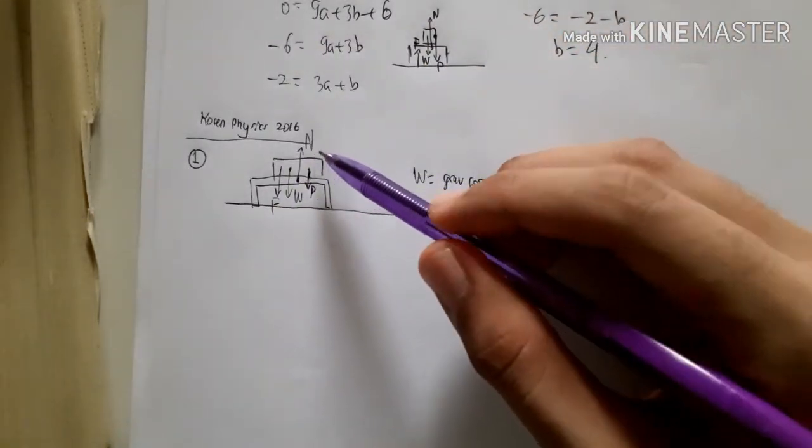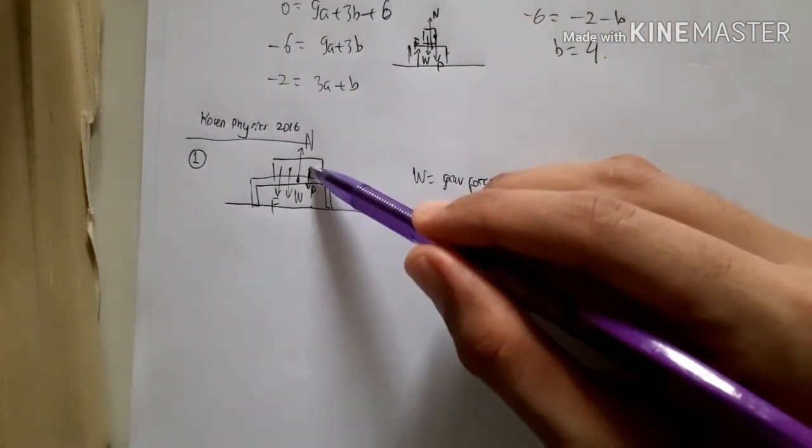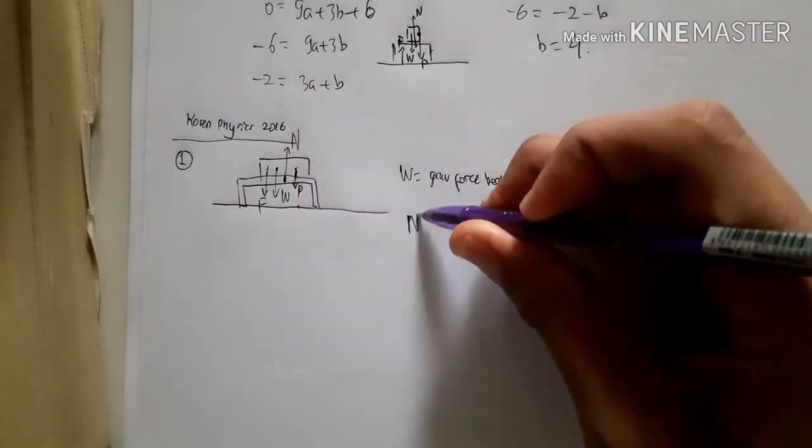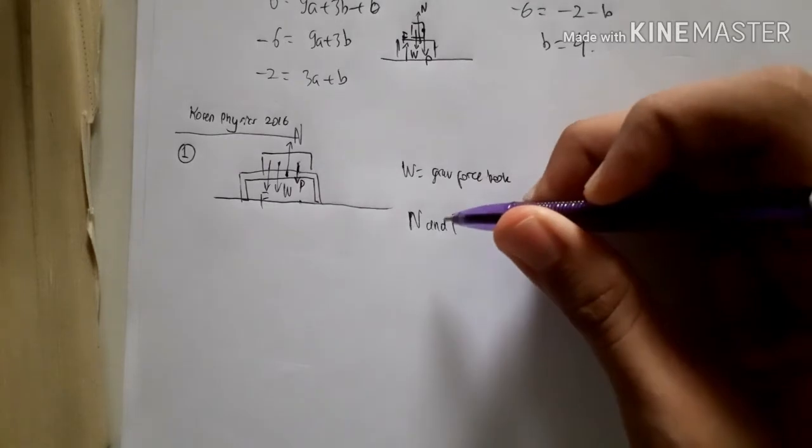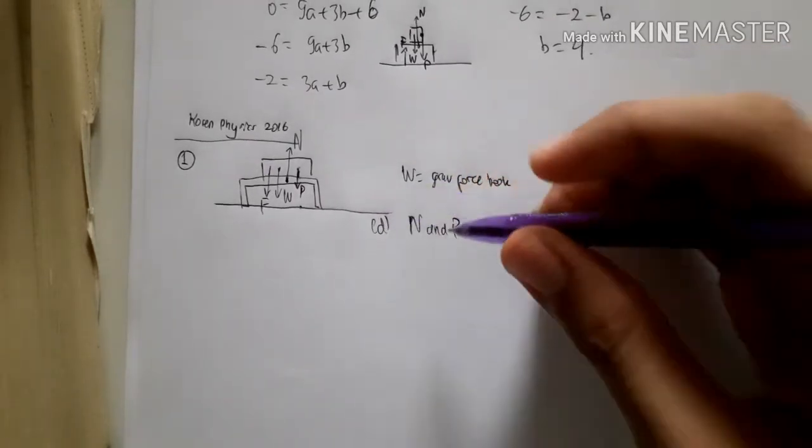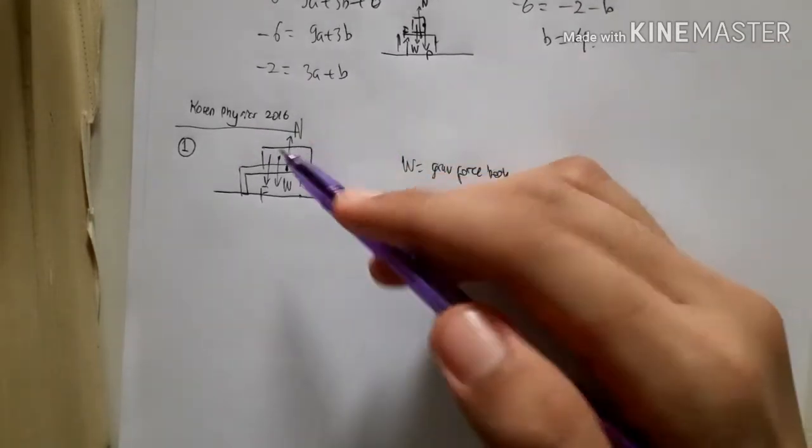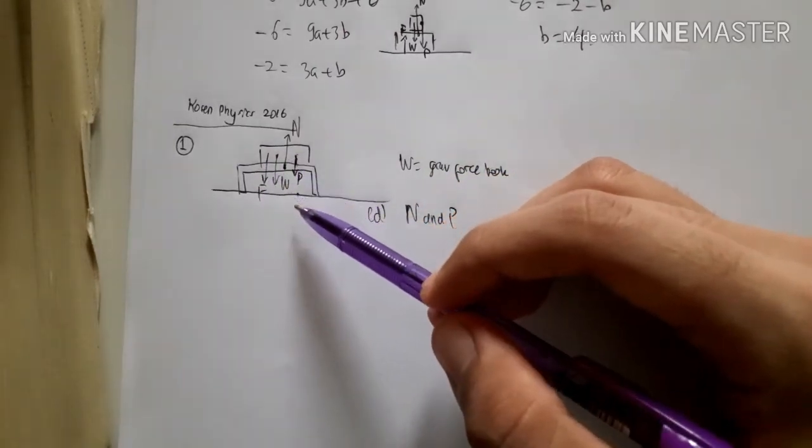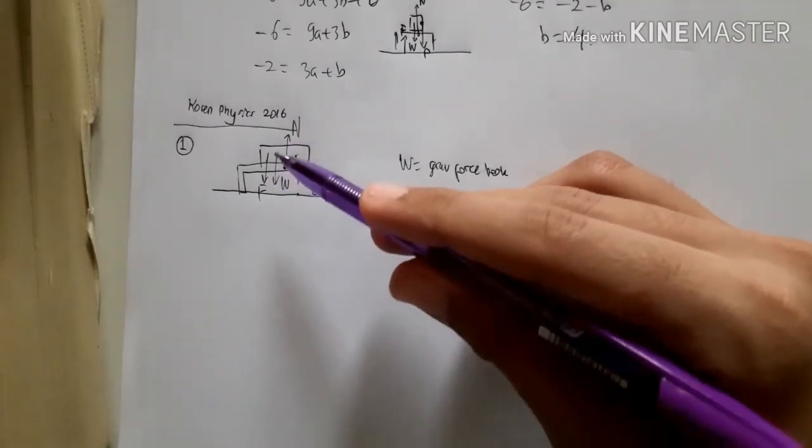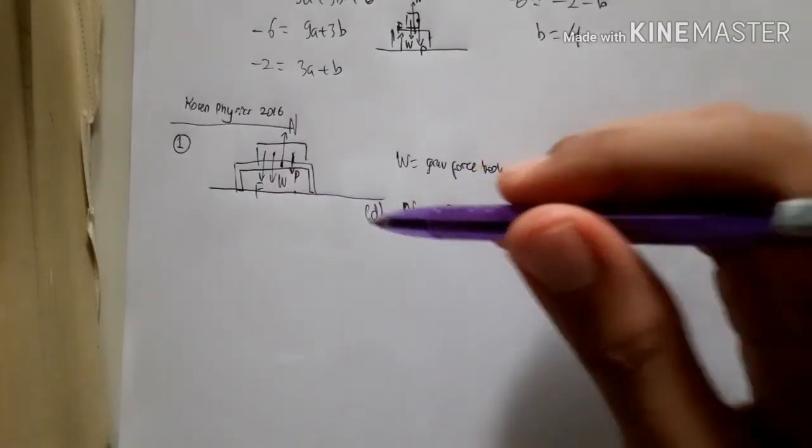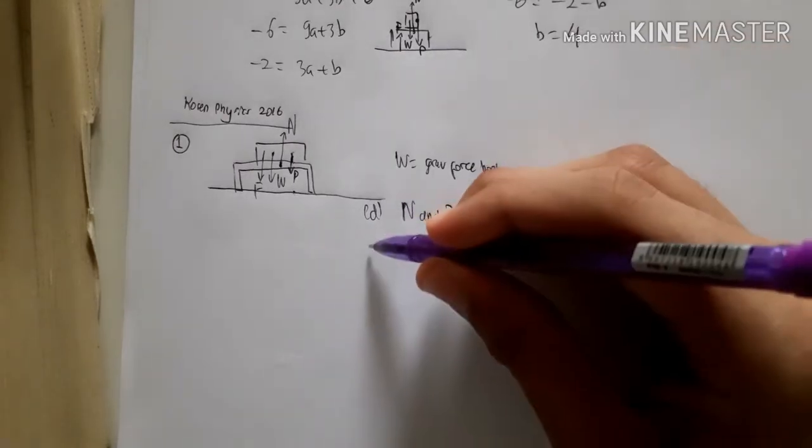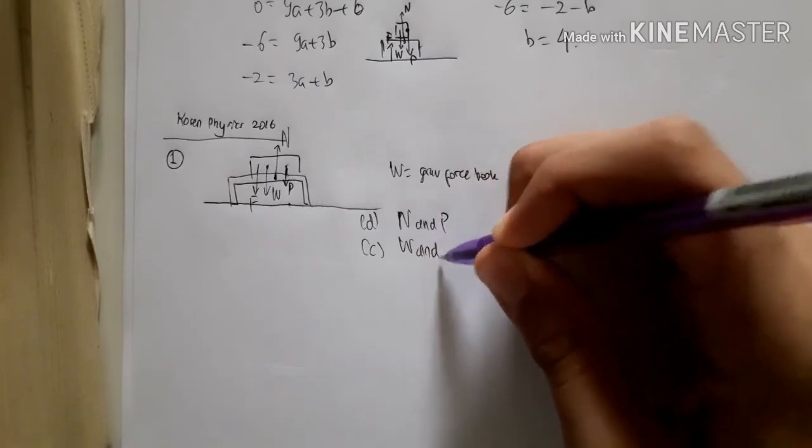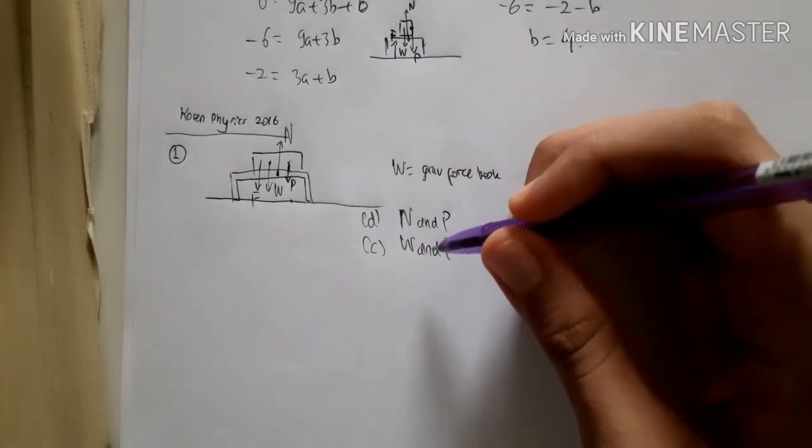So there's a pair here. When the book pushes the table, the table pushes back. So basically N and P is one of the pairs and that is option D. And for the gravitational force, it's actually a pair too because the book and the earth is not moving and the gravitational force is pushing towards each other, therefore making an action-reaction law. So option D and option C is the answer for box 11 and box 12.